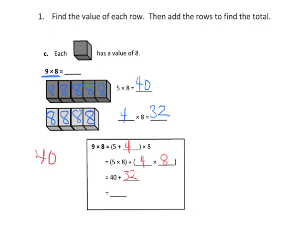And now we're going to add 40 plus 32. And we could do that in our head, but 0 plus 2 gives us 2, 4 tens plus 3 tens gives us 70. So our answer is 72. So 9 times 8 is 72.